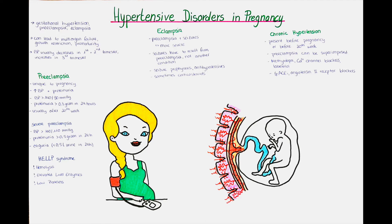Now we will talk about pre-eclampsia. This is a syndrome unique to pregnancy and usually ends after the pregnancy is finished. In this condition, the woman develops hypertension together with proteinuria. The proteinuria, so protein in the urine, is an important component of pre-eclampsia and helps to differentiate pre-eclampsia from gestational hypertension, where the woman has high blood pressure but without proteinuria.